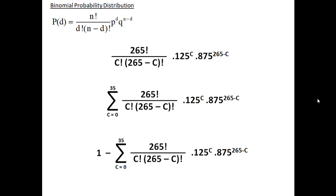The bottom equation subtracts that from 1, so it gives us the complement of the middle equation. The bottom equation is interpreted as: the probability of having more than 35 successes out of 265 trials with a probability of success of 12.5%. Most engineering applications will use either the middle or the bottom equation depending on what you're trying to calculate, but you want to be able to interpret the equation correctly.